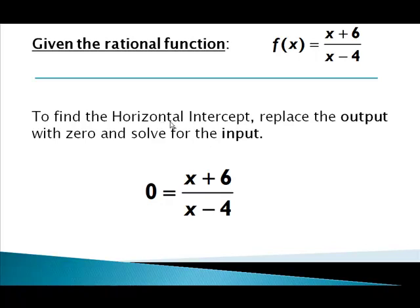exact opposite of what we did for the vertical intercept. Remember to find the vertical intercept we replace the input with zero and solve for the output. Here we're going to replace the output with zero, so f(x) is our output. We replace that with zero and we're solving for x which is our input.